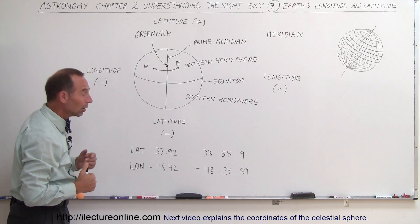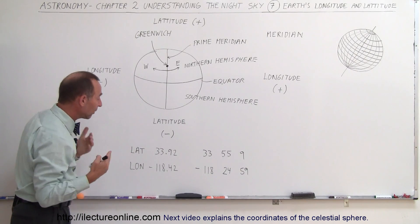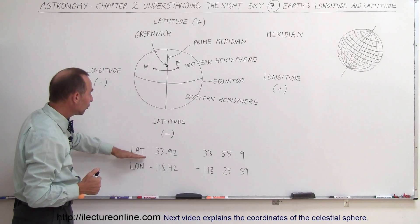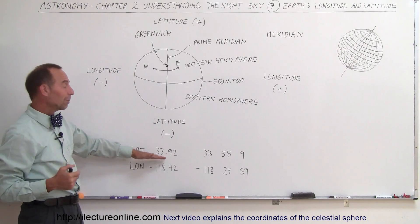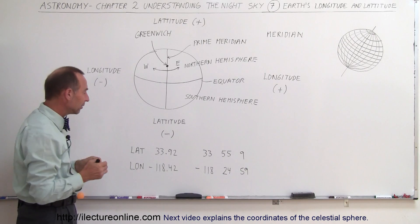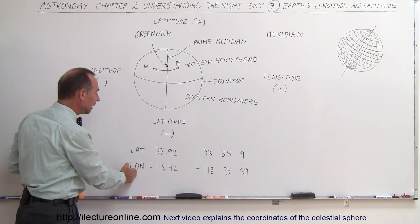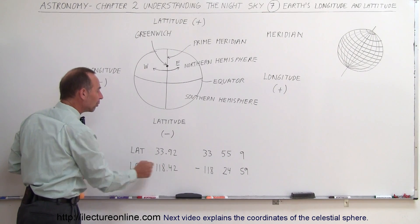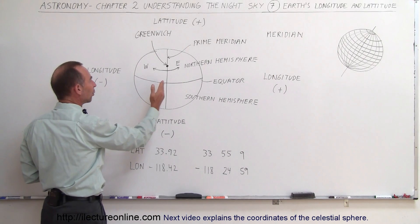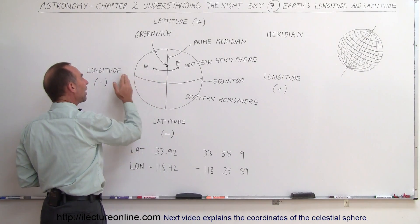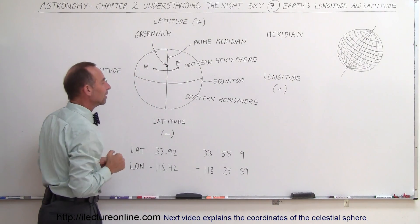Notice the position, the town where I'm in, is at latitude 33.92. That means 33.92 degrees above the equator. And the longitude is minus 118.42, which means 118.42 degrees west of the prime meridian.